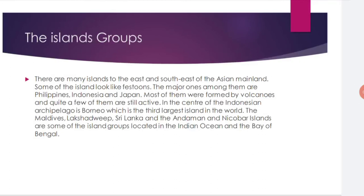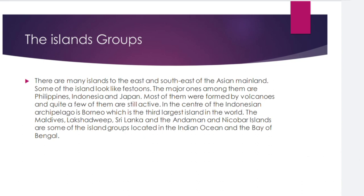The last physiographic division of Asia is the island groups. There are many islands to the east and south-east of the Asian mainland, and the islands look like festoons. The major ones are the Philippines, Indonesia, and Japan — most of them were formed by volcanoes and quite a few are still active. In the center of the Indonesian Archipelago is Borneo, which is the third largest island in the world. The Maldives, Lakshadweep, Sri Lanka, Andaman, and Nicobar Islands are some of the island groups located in the Indian Ocean and the Bay of Bengal.